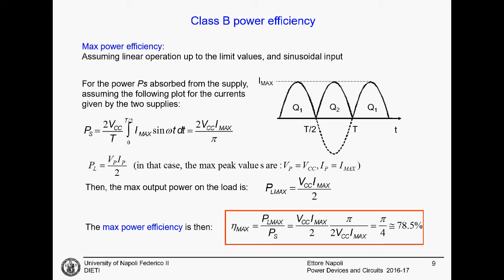The power on the load is Vp multiplied by Ip divided by 2. And in this case, you have the peak value that is Vcc and the peak current that is the maximum current. We can calculate the power efficiency as the ratio of PLmax divided by PS and you get π divided by 4, that is around 0.78, that is 78.5%.